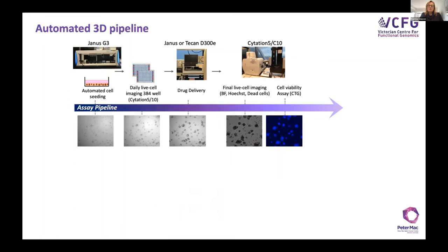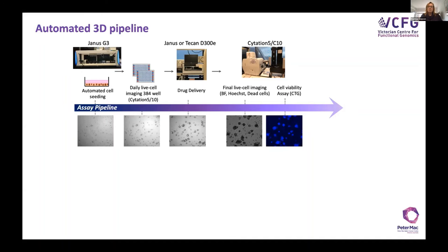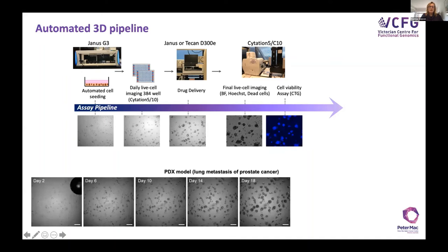This is where our Citations really come to the fore in our automated pipeline. We've developed a label-free imaging methodology because 3D can go for weeks before you hit the end game. We use our Janus to seed, then do daily live imaging in a 3- to 4-well format, deliver our drugs, then do live imaging again right through to the endpoint. Then we stain with DRAQ and some dead cell stain, and can add Cell Titer Glo to get a whole-well readout of viability.